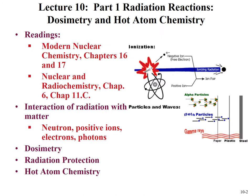The readings for this lecture on radiation reactions can be found in Modern Nuclear Chemistry, Chapters 16 and 17, and Nuclear and Radiochemistry, Chapter 6 and Chapter 11.C.